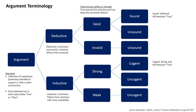Inductive reasoning is inherently uncertain. It only deals in degrees to which, given the premises, the conclusion is credible according to some theory of evidence. Examples include a many-valued logic, Dempster-Shafer theory, or probability theory with rules for inference such as Bayes' rule. Unlike deductive reasoning, it does not rely on universals holding over a closed domain of discourse to draw conclusions, so it can be applicable even in cases of epistemic uncertainty. Technical issues with this may arise, for example, the second axiom of probability is a closed-world assumption, an example of an inductive argument.